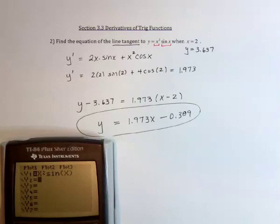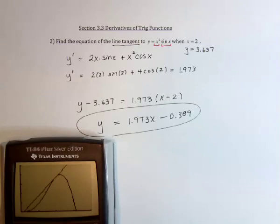So let's see. y equals 1.973x minus 0.309. And that seems to be it.